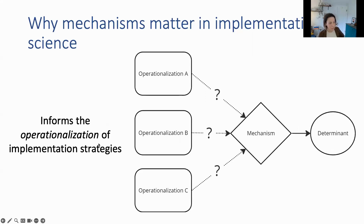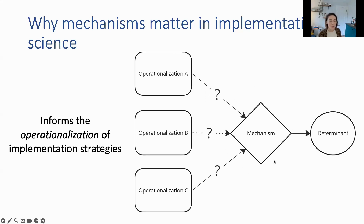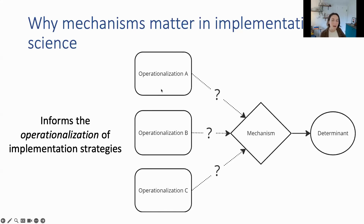Lastly, mechanisms inform the operationalization of our implementation strategies. One implementation strategy can be operationalized so many different ways. Take training, for example — not all training is equal. When we understand the way in which training works to address a particular determinant, whether it's trying to improve a knowledge gap or also includes aspects of persuasion to change somebody's values, it allows us to think through how we might operationalize that training. Whether that might be using didactic and modeling elements to get at knowledge and competence, or also using testimonials during training to tap into people's values.